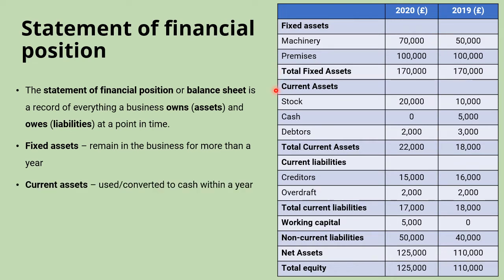Current assets come next. They are also things owned by the business, but this time across less than a year — they're constantly being used or sold. Examples include stock, or inventory, which is constantly being sold and replenished; cash at the bank, which is spent and deposited again; and debtors, or receivables, which is money owed to us that is waiting to be paid. These are added together to find the total current assets.